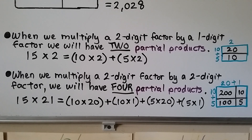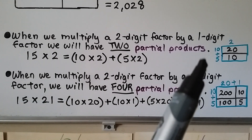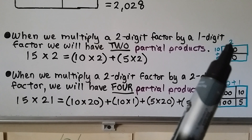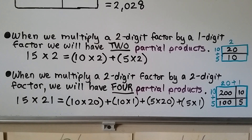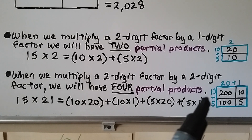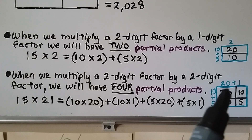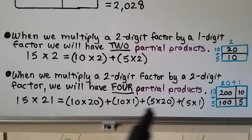When we multiply a 2-digit factor by a 1-digit factor, we'll have 2 partial products. For 15 times 2, the 15 is broken into 10 plus 5, and the 2 stays as 2. We have 10 times 2 (20) and 5 times 2 (10) — 2 partial products. When we multiply a 2-digit factor by a 2-digit factor, we will have 4 partial products. For 15 times 21, we broke 15 into 10 plus 5 and 21 into 20 plus 1, giving us 200, 10, 100, and 5 — 4 partial products.